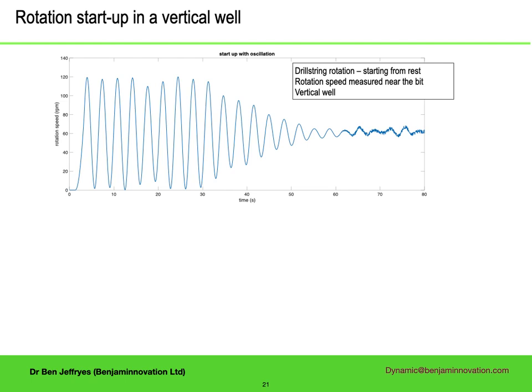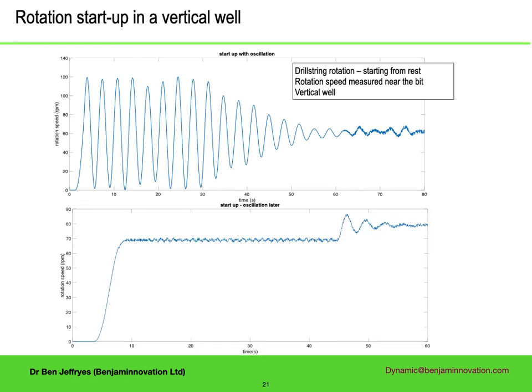In the same well at slightly different depth, when rotation started it went straight into steady rotation. But when the speed was adjusted a bit, at about 45 seconds, some oscillations started which took a while to damp down. In a horizontal well, you can see that it's quite a long time after surface rotation starts before the bit rotation starts, and it just stays in quite erratic high amplitude oscillations.